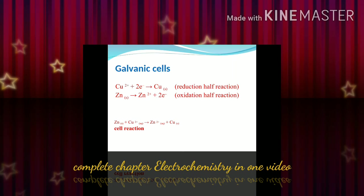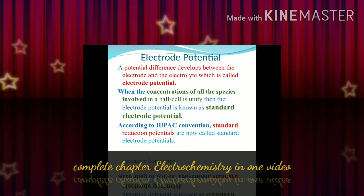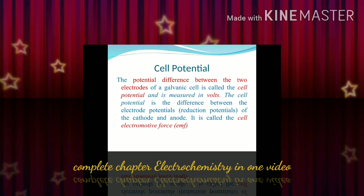In the galvanic cell, the reaction takes place as a reduction half-reaction and an oxidation half-reaction. You can see the reaction schemes. In the galvanic cell half-cell, oxidation takes place at the anode and reduction takes place at the cathode. The electrode potential is the potential difference developed between the electrode and the electrolyte.